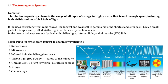Number eleven, electromagnetic spectrum. The electromagnetic spectrum is the range of all types of energy or light waves that travel through space, including both visible and invisible kinds of light. It includes everything from radio waves, which are the longest and weakest, to gamma rays, the shortest and strongest. Only a small part of this spectrum called visible light can be seen by the human eye. In the beauty industry, we mostly deal with visible light, infrared light, and ultraviolet UV light.